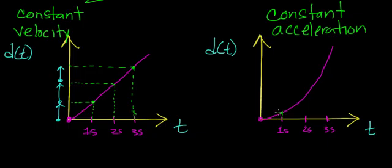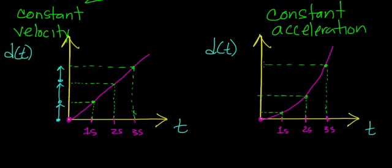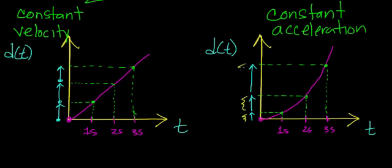Going up from the time axis, intersecting with the distance versus time curve and over to the distance axis, the displacement vectors get larger and larger, indicating that the distance traveled each interval of time for an accelerating object is getting greater and greater. For an object that's slowing down, these displacement vectors would get smaller and smaller.